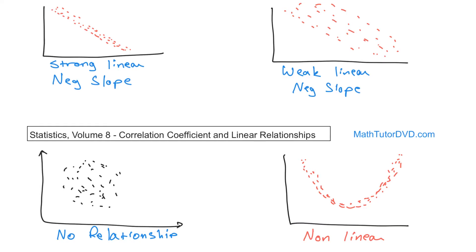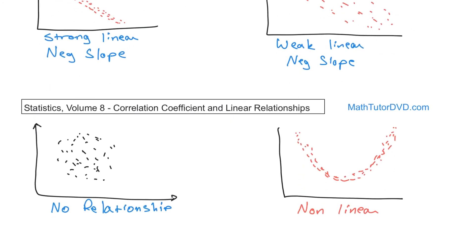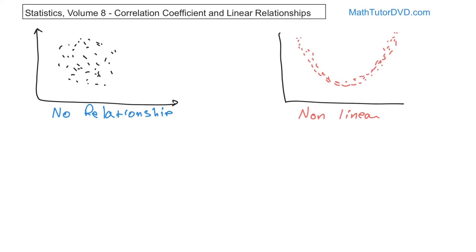Quick review: we have lines that go up in a positive fashion — we call them positive slope. We have strong linear when they're tightly packed, and weak linear whenever they're farther apart. Then we have negative slope when they go down to the right, with both strong and weak relationships. Somehow we want to roll all of that into the concept of a correlation coefficient.